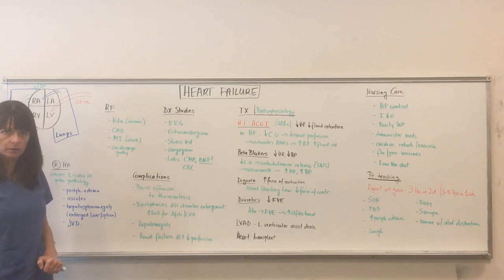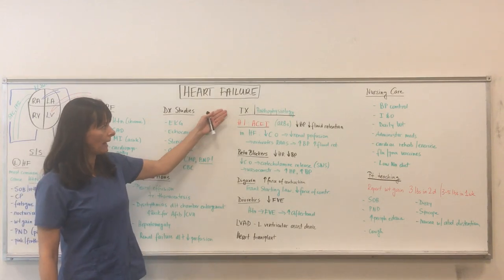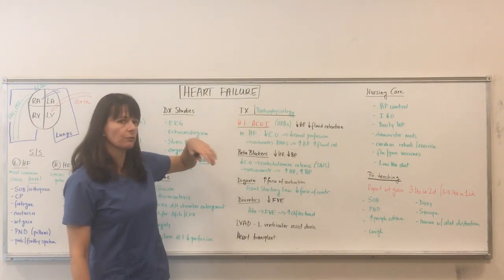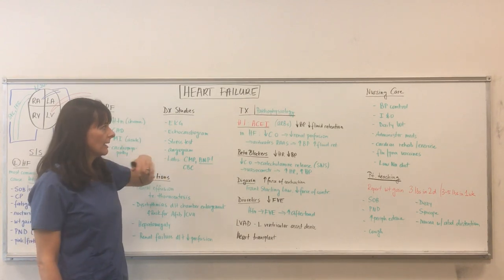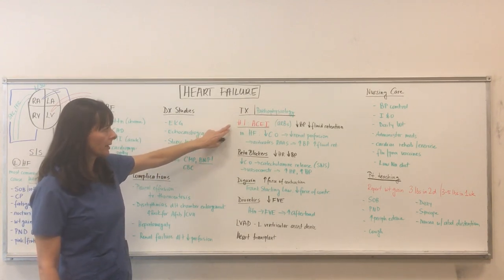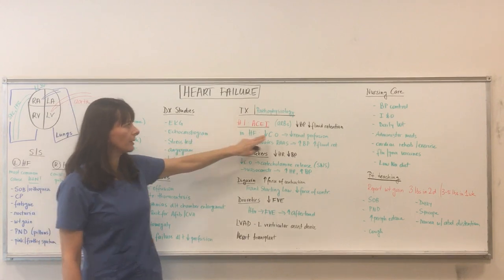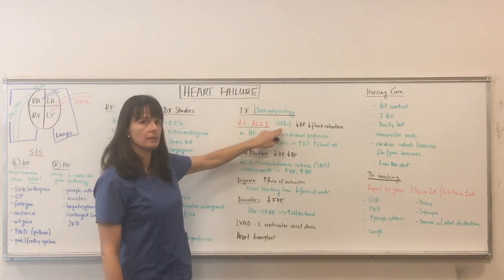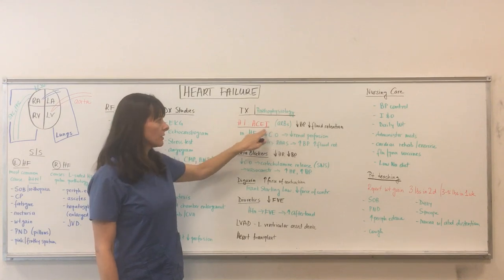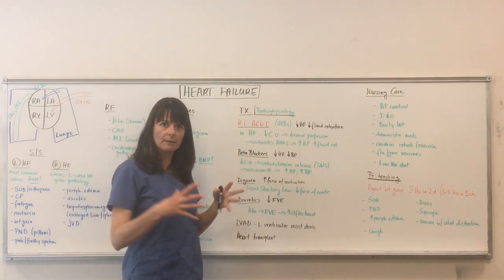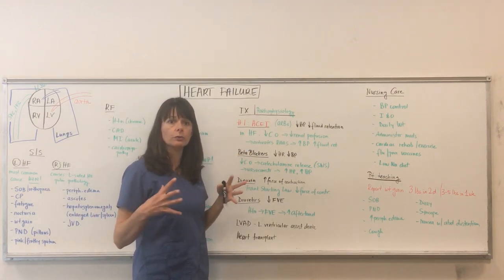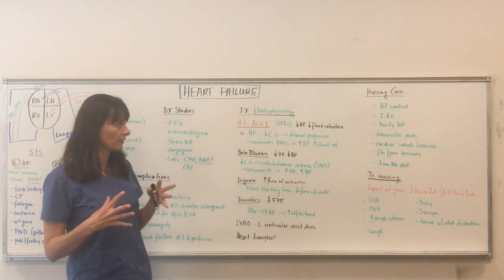Now how do we treat patients with heart failure? I wrote the treatment in black and the pathophysiology in green so you can understand why we're doing these things. ACE inhibitors are the number one treatment for heart failure — and also angiotensin receptor blockers. Both pertain to the RAS system. In heart failure, there's decreased cardiac output because that heart muscle has been stretched for so long that it's not pumping efficiently.